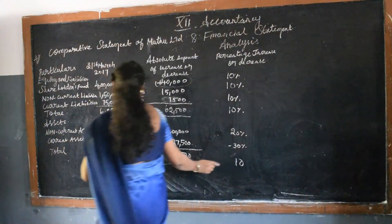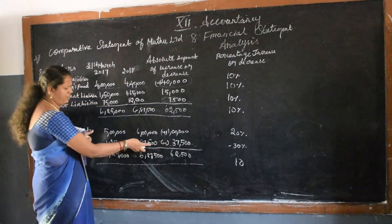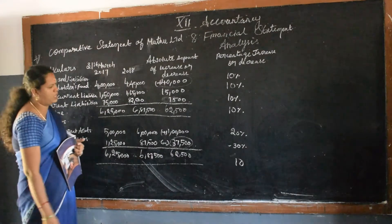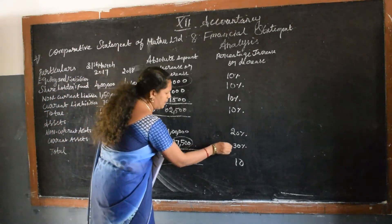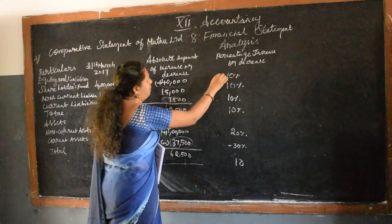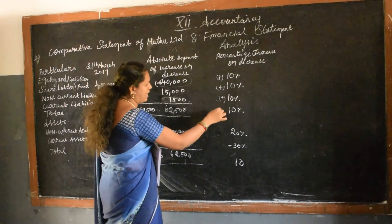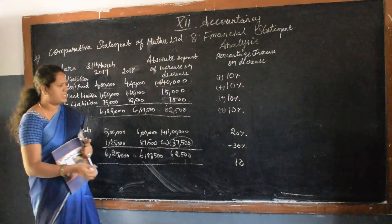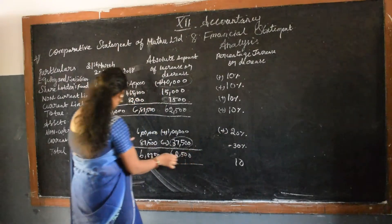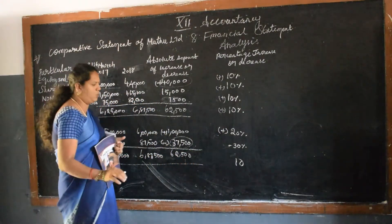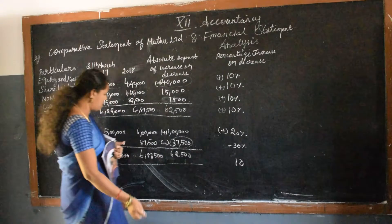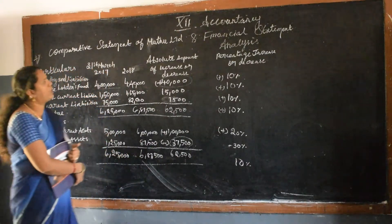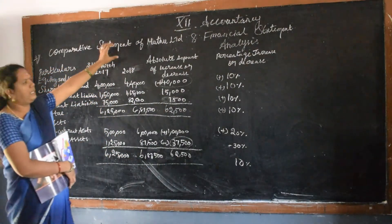For current assets, I am writing minus 30% because the value has been reduced — it is a decrease. 37,500 divided by 1 lakh 25,000 gives minus 30%. The plus symbol shows the value has increased; current assets is the only item that has decreased, so that is minus 30%. The total assets percentage is also 10%. That is the end of the comparative statement of Mako Limited.